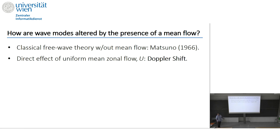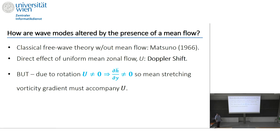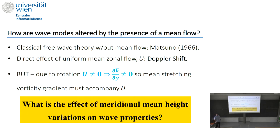But when we add the mean flow, even a uniform mean flow, the direct effect is of course the Doppler shifting of the speed. But rotation yields another effect: since if the mean flow is not zero, there is also a mean stretching vorticity gradient, and it might cause some differences. The main question we address is: what is the effect of this change in H-bar — in the mean height variation — on the wave properties?